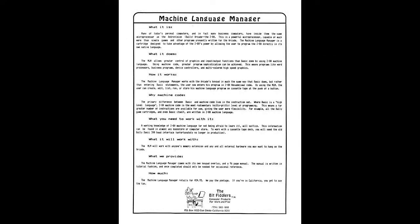This is the first full-page ad for the Machine Language Manager, appearing in the Arcadian on page 63 of the April 1982 issue. It describes what the Machine Language Manager can do. Many of today's personal computers and even business computers have inside them the same CPU — in the Astrocade's case, a Z80. It's a great processor that didn't catch on as much in the United States as it did in Europe, particularly in England where the ZX Spectrum used it heavily.